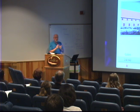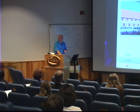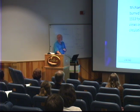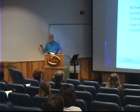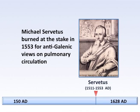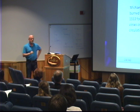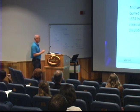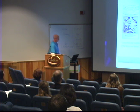So closely guarded was this by the church that any dissension was punishable by imprisonment or death — an unfortunate fate met by Servetus, who was burned at the stake for daring to defy Galen and proposing that blood might get from the right ventricle to the left ventricle through the pulmonary circulation.